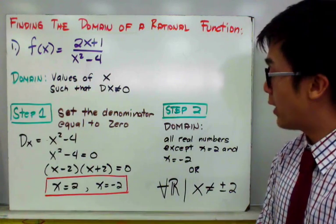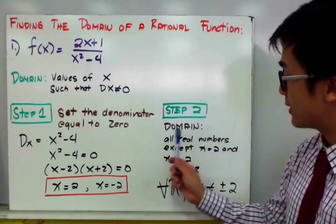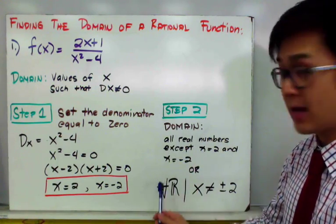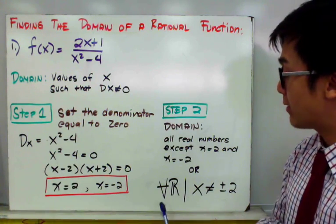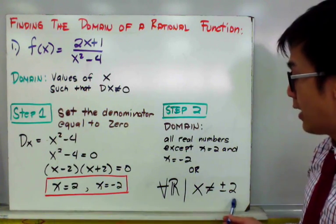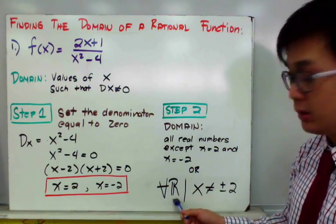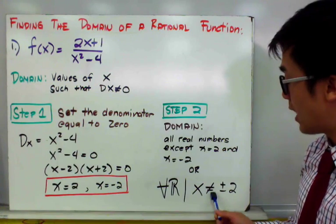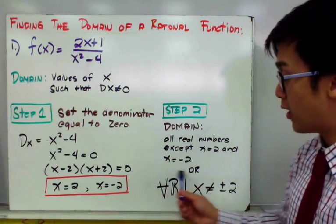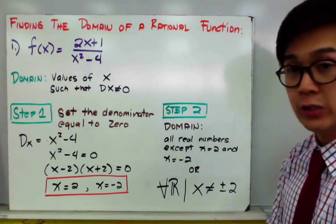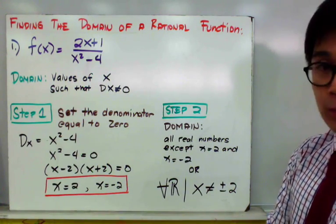Also, if you don't want to write the domain in complete sentences, you can use mathematical notation to represent it. We write the domain as: for all real numbers such that x is not equal to plus or minus 2. This is one way of expressing the domain using mathematical symbols, and that is example number 1.